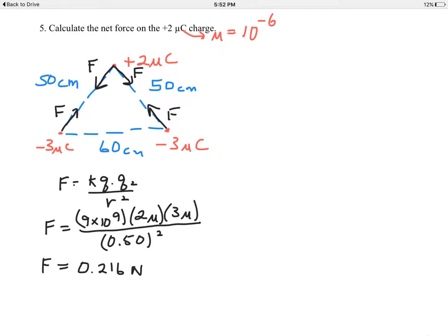Like any vectors that are not lined up, we need to find components. But the nice part here is there's some symmetry because both forces are the same. I'll focus on the one that's down into the left—that's 0.216 newtons. It has an F sub y and an F sub x.